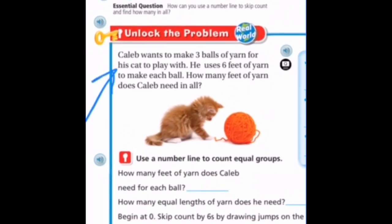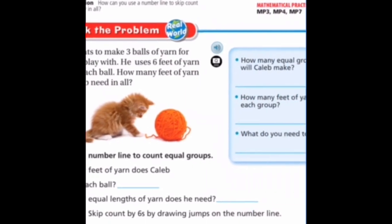And as always, we'll start with Unlock the Problem. It says, Caleb wants to make three balls of yarn for his cat to play with. He uses six feet of yarn to make each ball. How many feet of yarn does Caleb need in all?